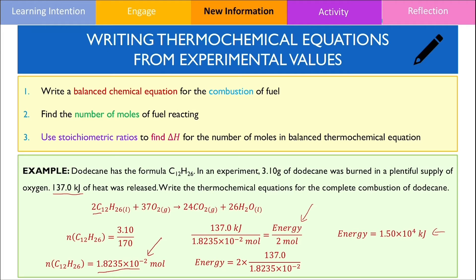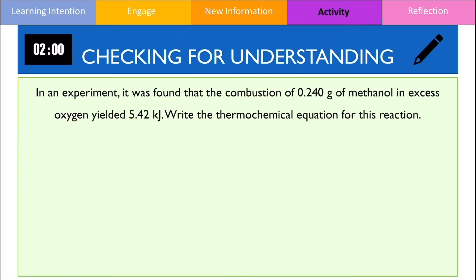This is the amount of energy released from combusting 2 moles of dodecane, so we can write the change in enthalpy of the reaction as the negative value of this answer because it's an exothermic process. The change in enthalpy and your final thermochemical equation should look like this. I would now like you to practice solving a similar question — pause the video now and resume when you're ready to compare your answer.